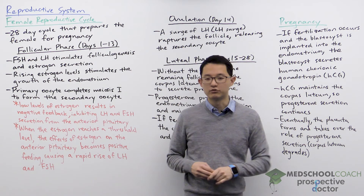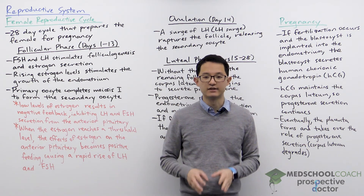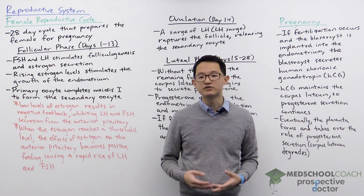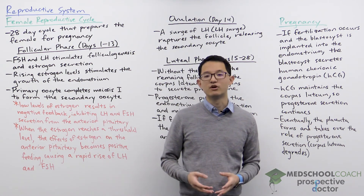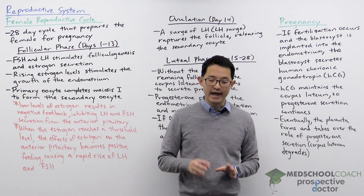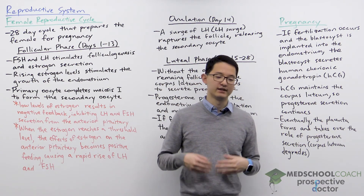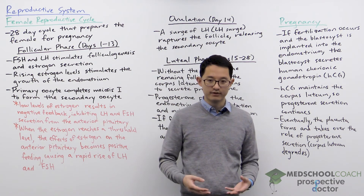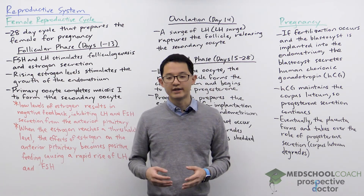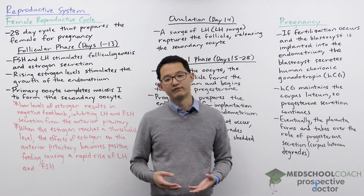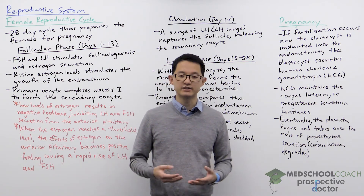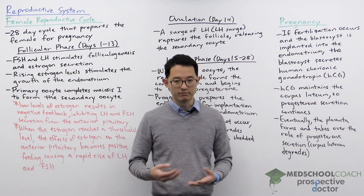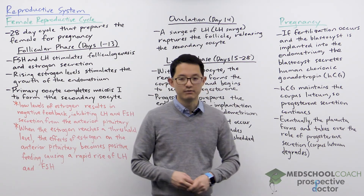HCG has an important role in that it maintains the corpus luteum. Since the corpus luteum is being maintained, it will continue to secrete progesterone, which will maintain the endometrium so that the implanted blastocyst can develop. Eventually the placenta develops and takes over the role of secreting progesterone, at which point the corpus luteum will degrade.